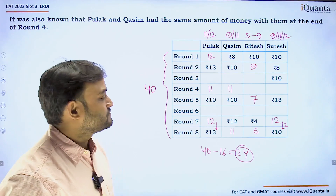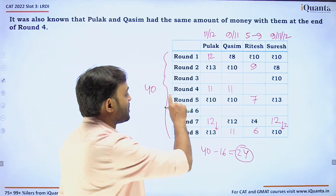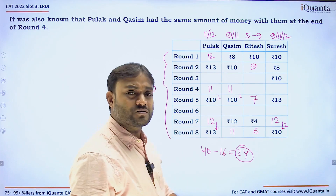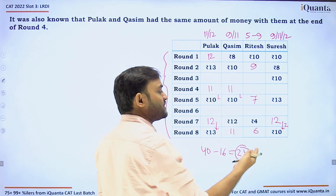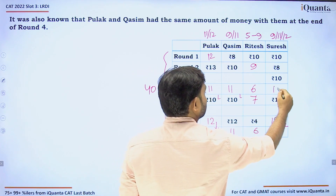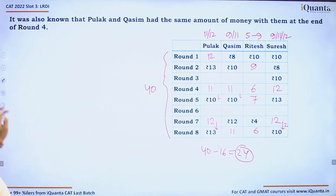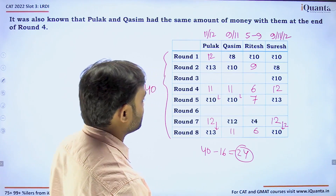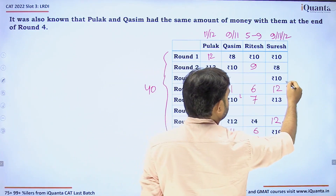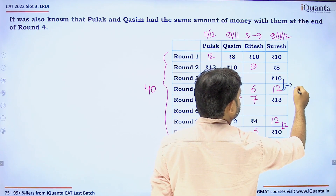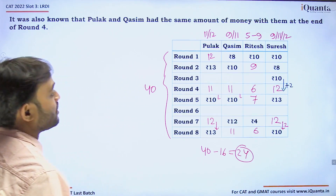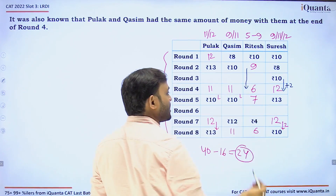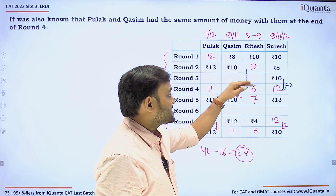Summing Round 8: 16 + 24 = 40. Now for Rounds 4 and 5: Pulak and Kasim are both losers, each losing 1 rupee, so Ritesh and Suresh each won 1 rupee — giving Ritesh 6 and Suresh 2 in Round 5. Now looking at Rounds 3 to 4, Suresh won 2 rupees, so someone must have lost 2 rupees.